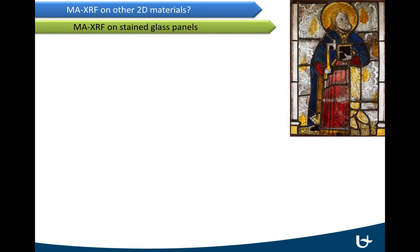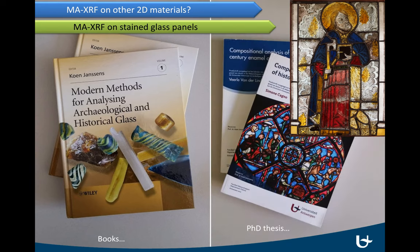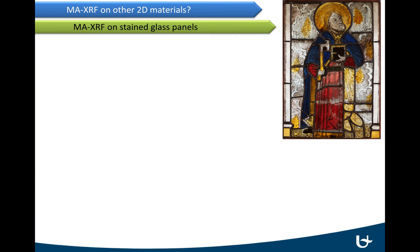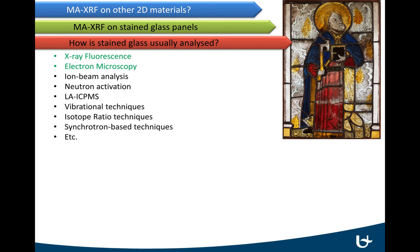Another type of object that resembles a painting to a certain extent are stained glass windows. By coincidence, there is quite some expertise in our research group on glass analysis. In the last decade, books were published, PhD research was done, and various articles were published by colleagues of mine. But before embarking on scanning experiments on windows, it's probably useful to figure out how stained glass windows are usually analyzed.